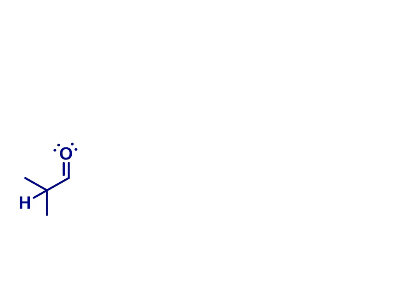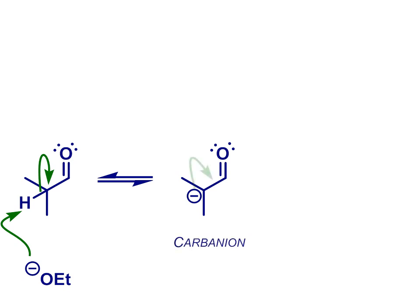Alternatively, treating our carbonyl compound with a strong base, such as sodium ethoxide, the conjugate base of ethanol, can remove the hydrogen next door to the carbonyl group. We can draw the resulting deprotonated species as a carbanion, with a negative charge localized on carbon,